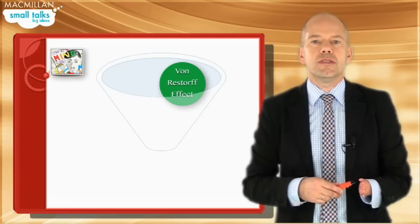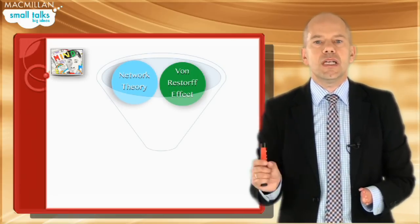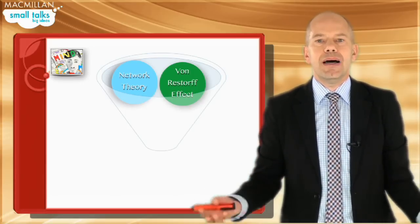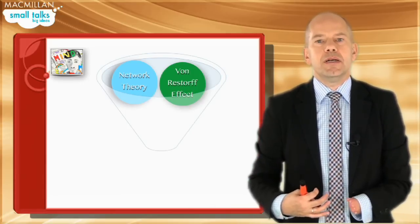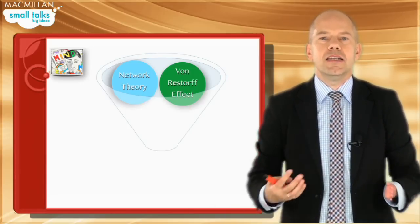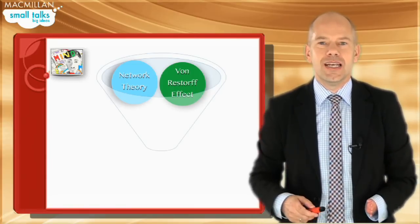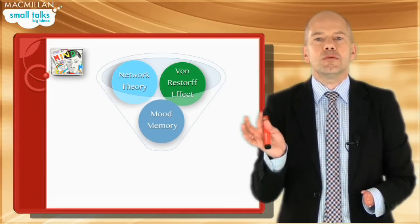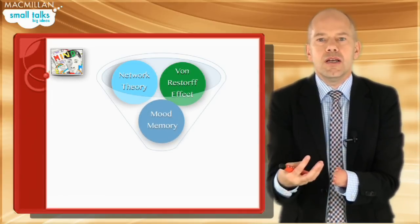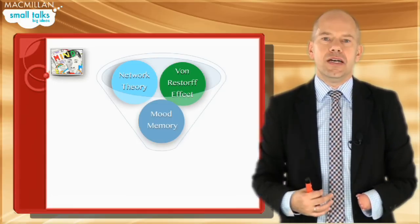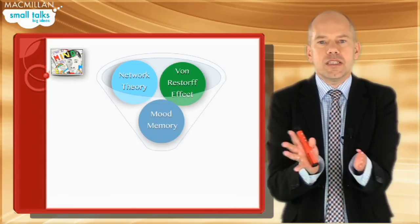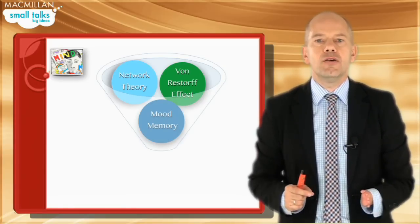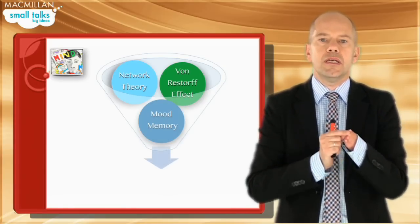Another important source of inspiration is the network theory, which says that the brain naturally creates semantic and affective links. But in order to create an affective link, there needs to be an emotion. Speaking of which, mood theory — the third source of inspiration — says that we tend to recall things with the mood with which they were originally learned. I hope that all of this shows you how we can use those sources of inspiration in the aid of long-term vocabulary retention.